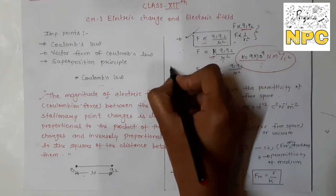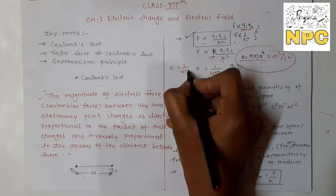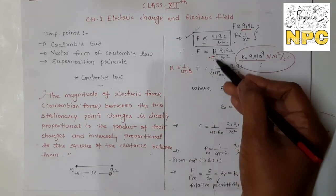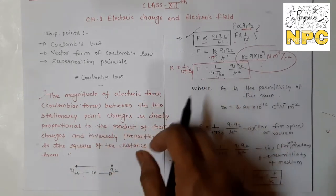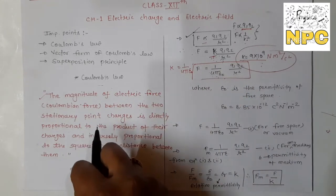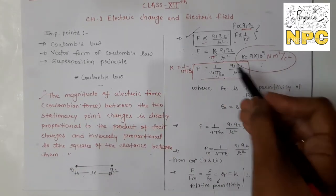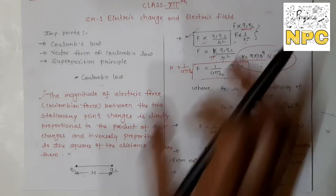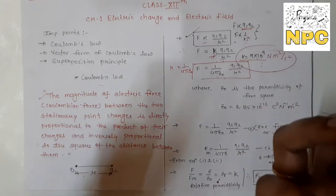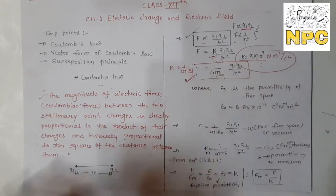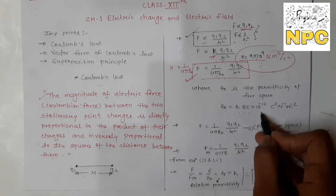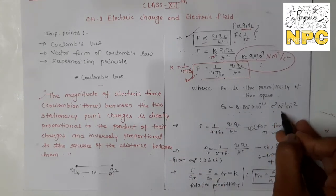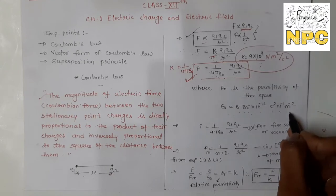Sometimes K is written as 1/(4πε₀). If we substitute the value of K, the equation contains ε₀, which is the permittivity of free space. So we can write this equation for free space — meaning if you have placed two charges in free space, the force between them is given by this equation. The value of ε₀ is 8.85 × 10⁻¹² coulomb² per Newton·meter².